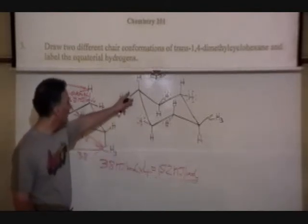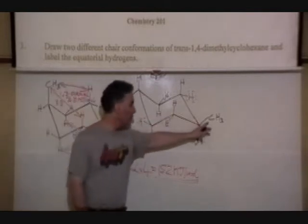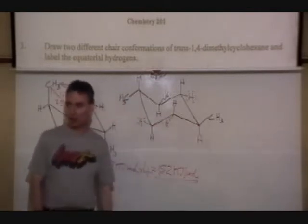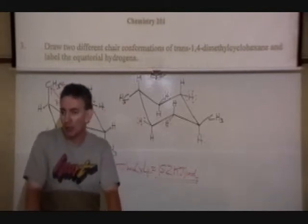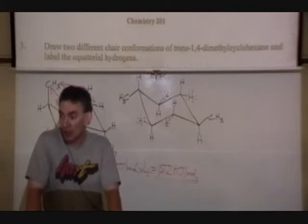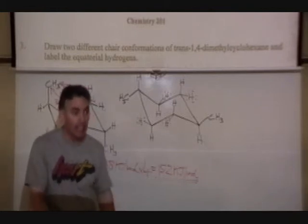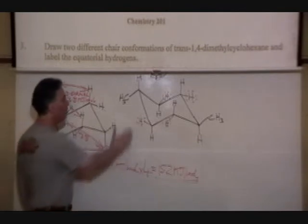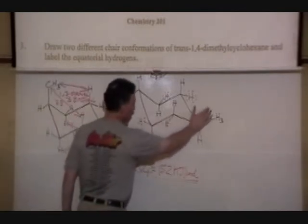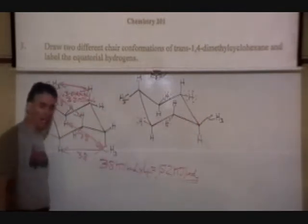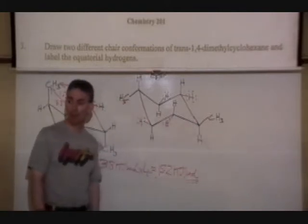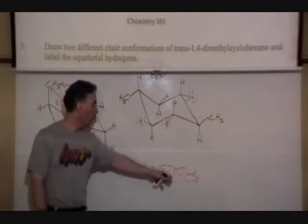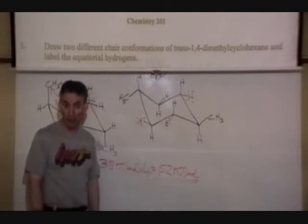The second one, we have the CH3 groups in our equatorial position. So we don't have any problems from 1,3-diaxial interaction. If they're not in an axial position, it can't be a 1,3-diaxial interaction. So the equatorial positioning of the 1,4 trans isomer is a lower energy conformation. 15.2 kilojoules per mole lower in energy.